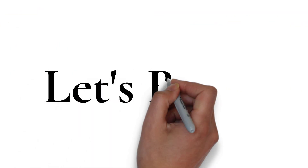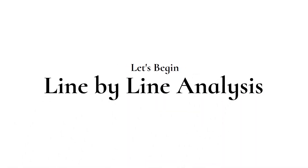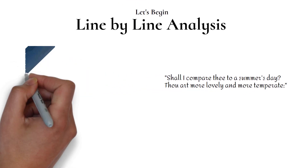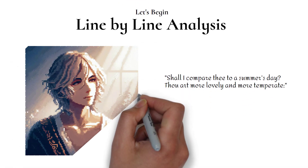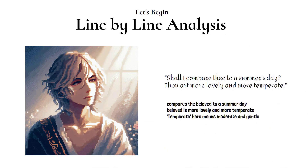Let's begin by breaking down the poem, stanza by stanza, to understand its key ideas and imagery. "Shall I compare thee to a summer's day? Thou art more lovely and more temperate." In the opening lines, the speaker contemplates whether to compare the beloved to a summer's day. He immediately decides the beloved is more lovely and more temperate — meaning moderate and gentle — suggesting a calm beauty that surpasses the sometimes harsh qualities of summer.